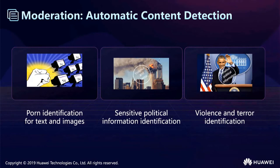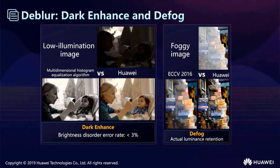The content moderation service can automatically detect pornographic content and other serious violations. For example, an image of Obama would receive a political tag. For DeepLar, it can enhance the brightness of a picture and also remove haze from images. Comparing DeepLar's recognition performance with mainstream aggregation solutions, DeepLar performs better.